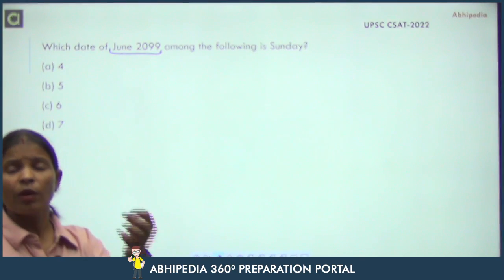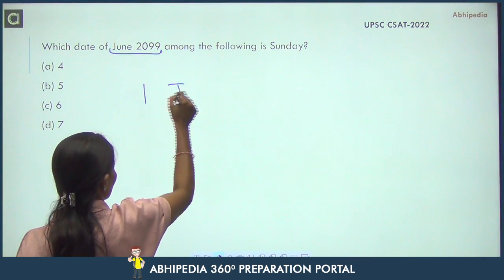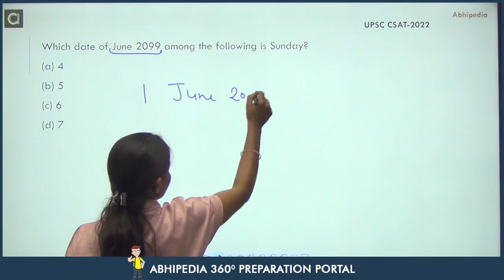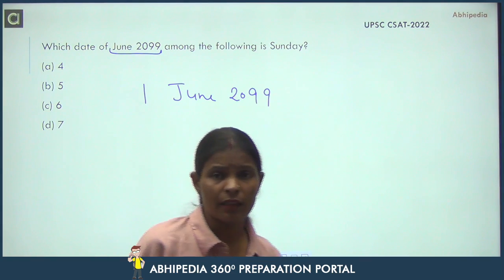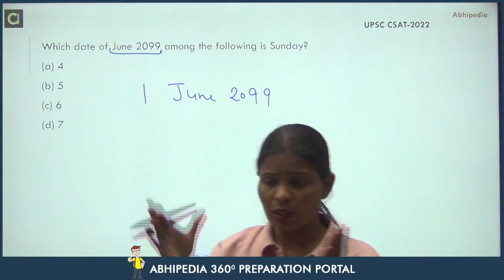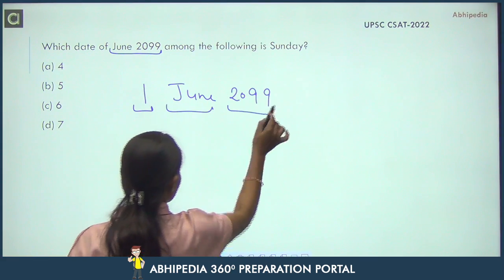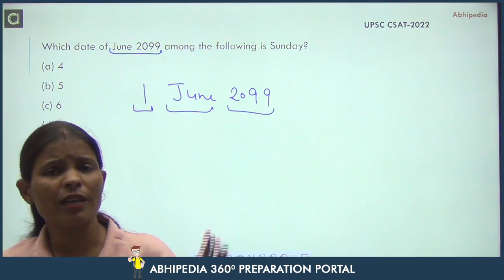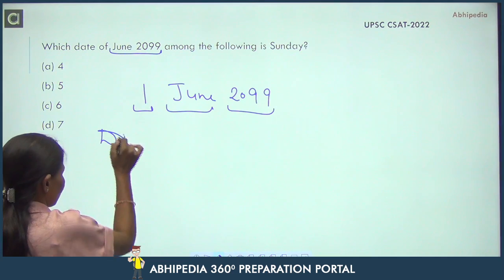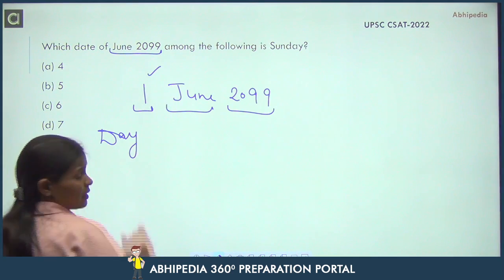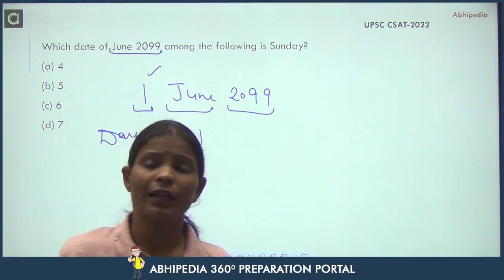We will find out the day on 1st June. Whenever a particular date is given in the question, you need to find out the number of odd days. For the date, which is 1st, we have 1 day. When you divide 1 by 7, the remainder is 1 odd day.